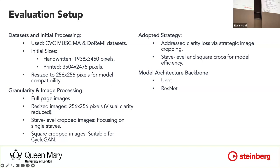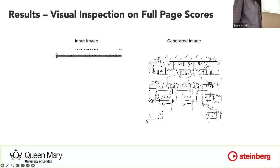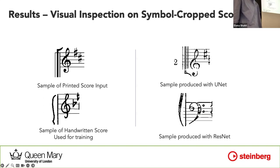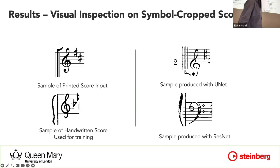The backbone options for the generator are UNet and ResNet. With the full-page approach, the learning doesn't really work because the generated image is not a good mapping of the input — we're using a one-to-one save producing a full page. Then we moved to cropping at what we call symbol level, trying to include more than one symbol at a time. These are two samples: one from the printed source and one from the handwritten score when using the cropping approach.